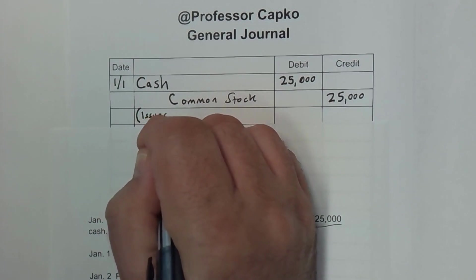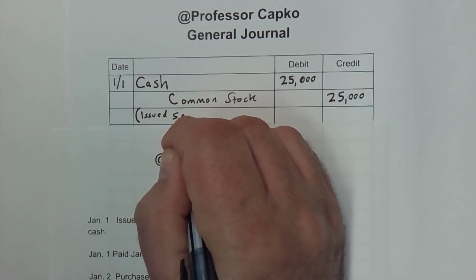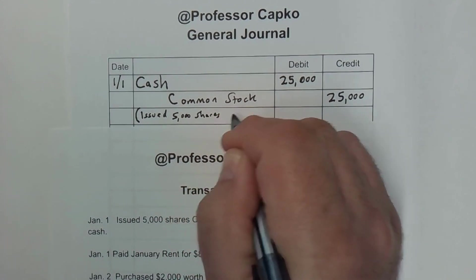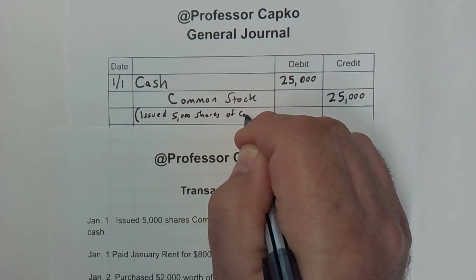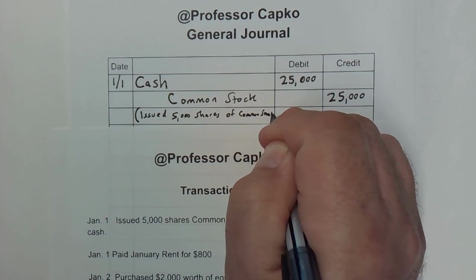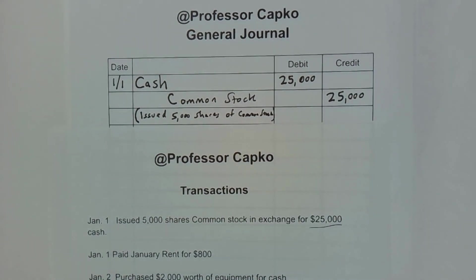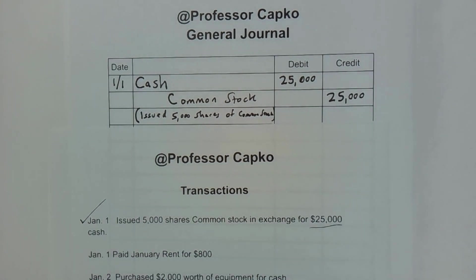Just say 'issued 5,000 shares of common stock.' So just some sort of description is a good practice. So we've taken care of the first transaction. I like to check it off when I'm done with it.